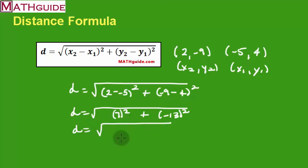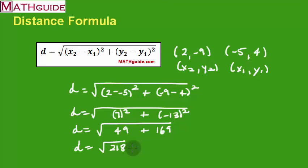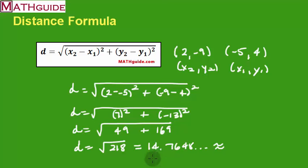Next, take 7 and square it: 7 times 7 is 49. Then take negative 13 and square it: 13 times 13 is 169. Adding what's inside the radical gives 218. Taking the square root of 218 gives an irrational number that goes on forever with no repeating pattern — about 14.7648 and so on. So we round to the nearest tenth: because of the 6 in the hundredths place, it's closer to 14.8. That's the distance between those two points.